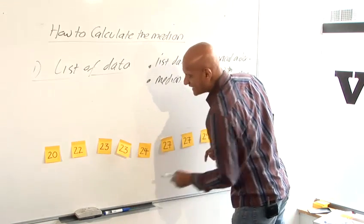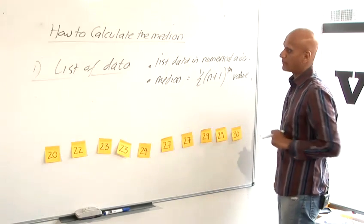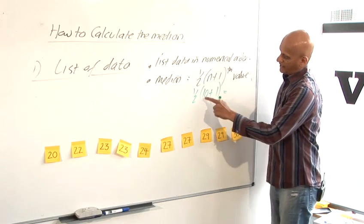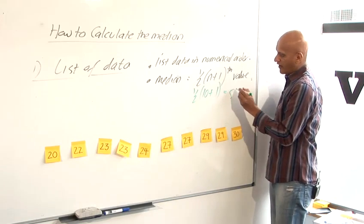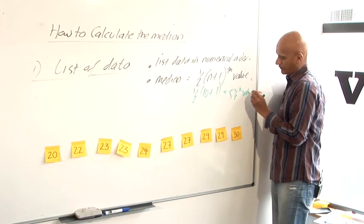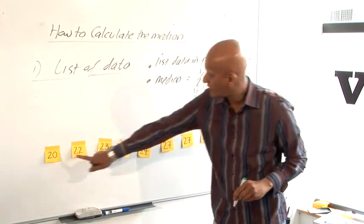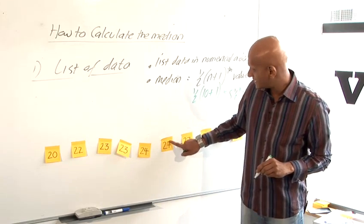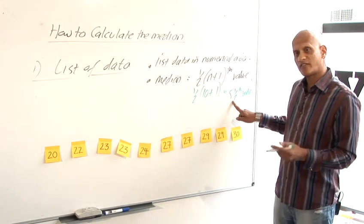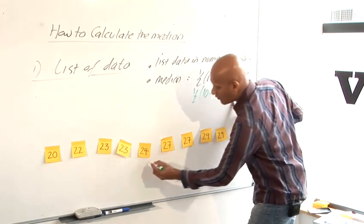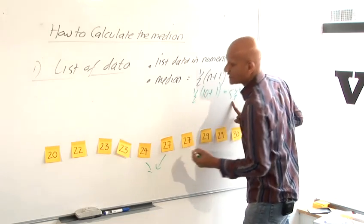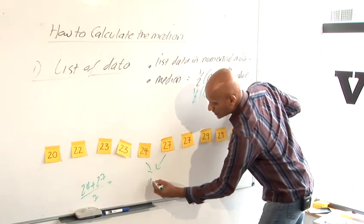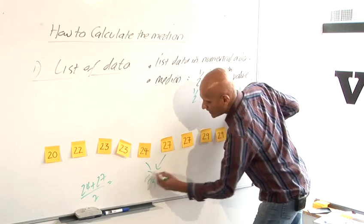So in my example, n is 10. There are 10 numbers there. So n is 10 plus one times a half. So it's 11 divided by two is the five and a half value. Well, one, two, three, four, five. My fifth value is 24 and my sixth value is 27. So my five and a half value would have to be halfway in between those. So halfway in between 24 and 27, add them up, 24 plus 27, divide it by two, and so that gives me 25.5 is my median.